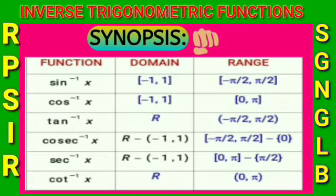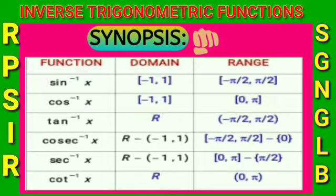Tan⁻¹: domain is ℝ, range is (-π/2, π/2). Cosec⁻¹: domain is ℝ \ (-1,1), range is [-π/2, π/2] \ {0}. Sec⁻¹: domain is ℝ \ (-1,1), range is [0, π] \ {π/2}. Cot⁻¹: domain is ℝ, range is (0, π).